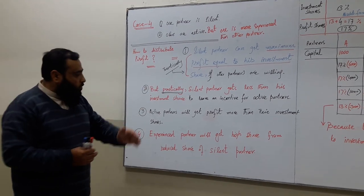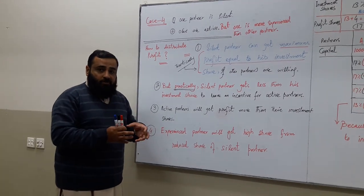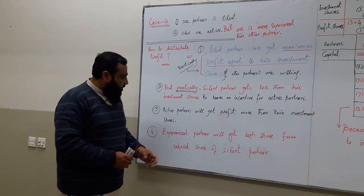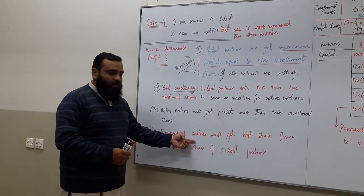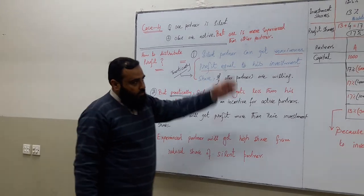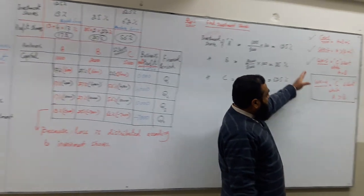Then the reduced part of profit from silent partner will be distributed into active partners. But a higher share from that reduced portion of the silent partner will be given to the experienced partner. The remaining will be given to the less experienced partner.